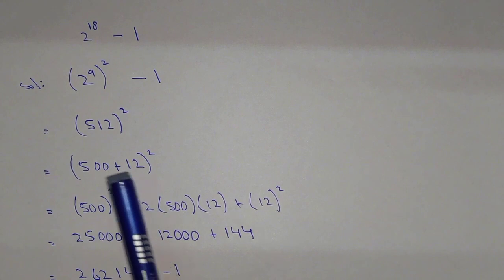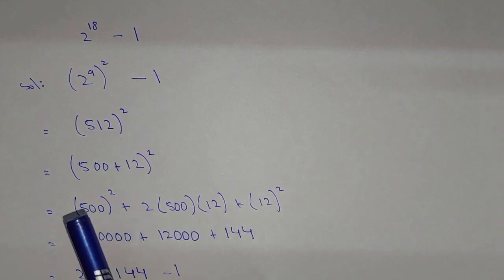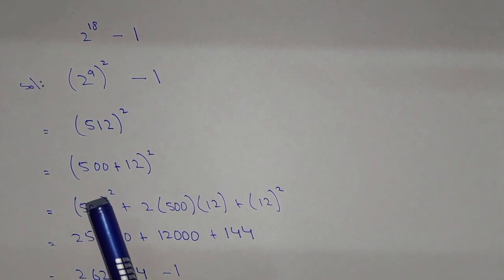500 squared is very easy. No need to use a calculator, and you know that calculators are not allowed in Olympiad competitions anyway.